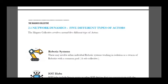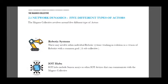This project includes five systems. The first is robotic systems, which may involve either an individual robotic system working in isolation or a swarm of robotics with a common goal. Robots working in isolation — it's our future and very useful for people. The second is IoT hubs.